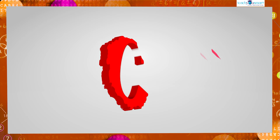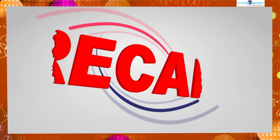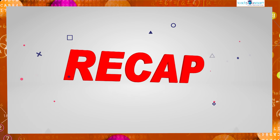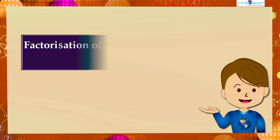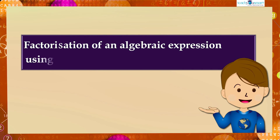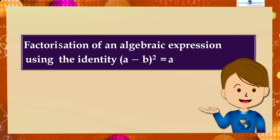Let's review what we discussed today: factorization of an algebraic expression using the identity (a minus b) whole square equals a squared minus 2ab plus b squared.